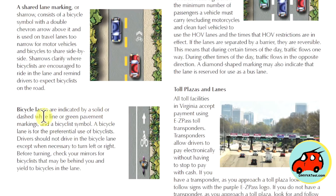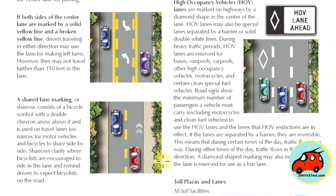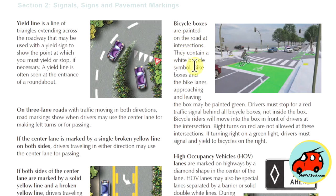Bicycle lanes are indicated by a solid or dashed white line or green pavement markings with a bicycle symbol — the bicycle lane is the preferred use for bicyclists. Drivers should not drive in the bicycle lane except when necessary to turn; before turning, check mirrors for bicyclists behind you and yield to the bicycle lane. Bicycle boxes are painted on the road at intersections and contain a white bicycle symbol — bike boxes and approaching bike lanes may be painted green. Drivers must stop for a red traffic signal behind the bicycle box, not inside it. Bicycle riders will move into the box in front of drivers at the intersection. Right turns on red are not allowed at these intersections; if turning right on a green light, drivers must signal and yield to bicycles on the right.